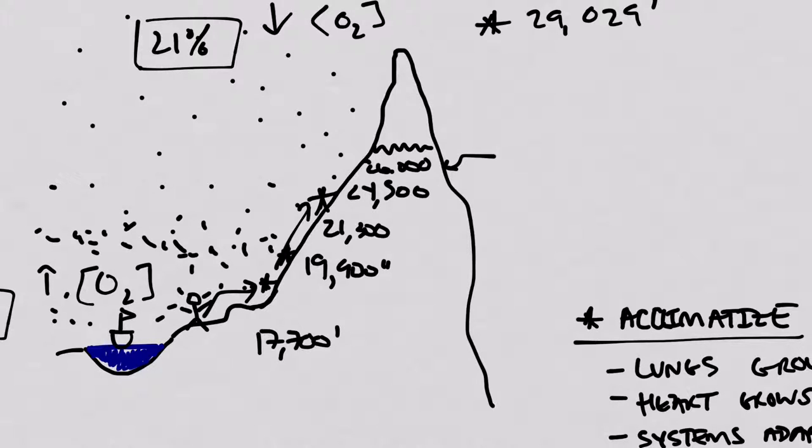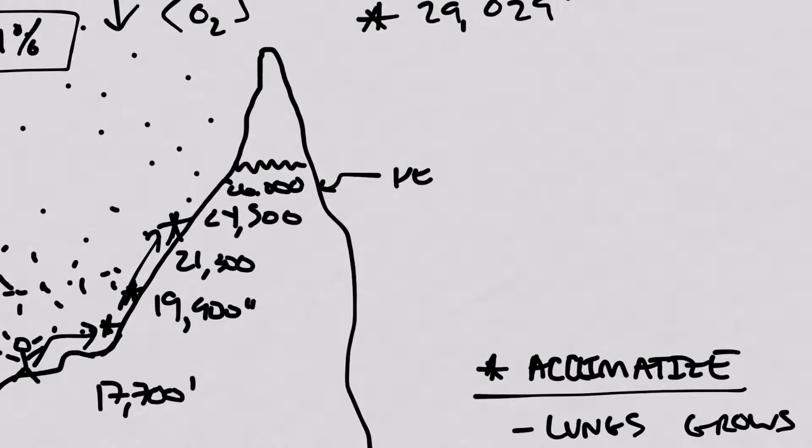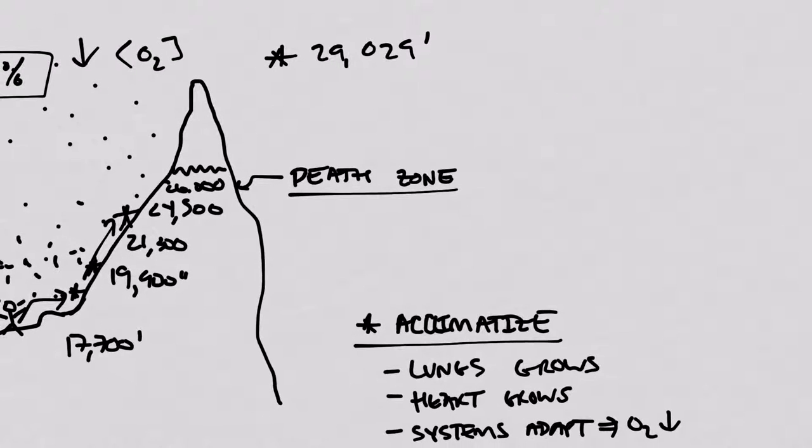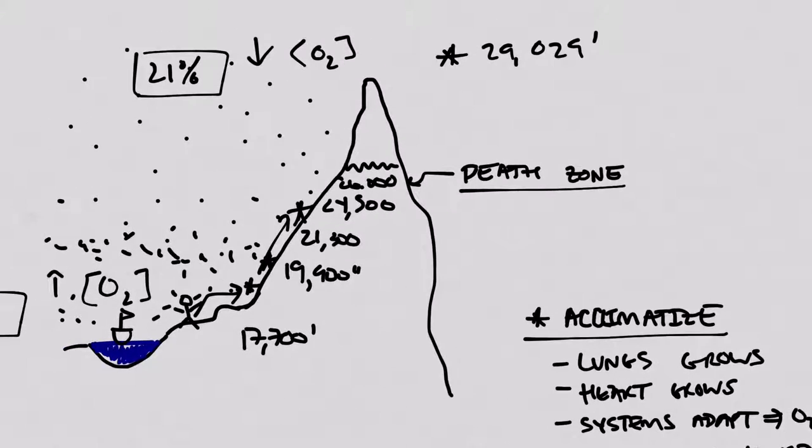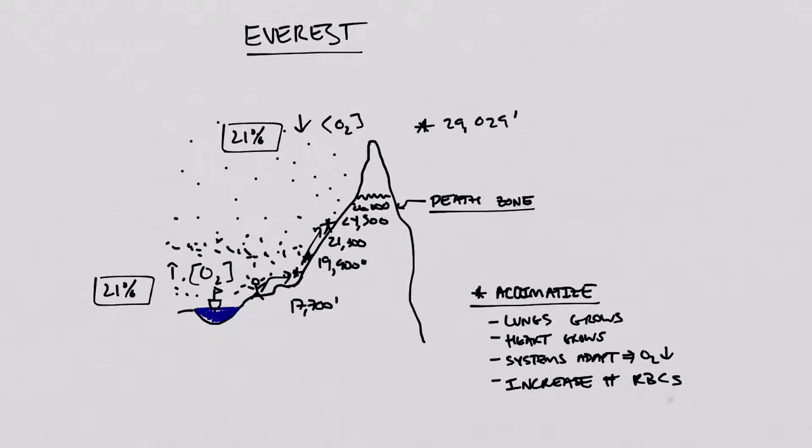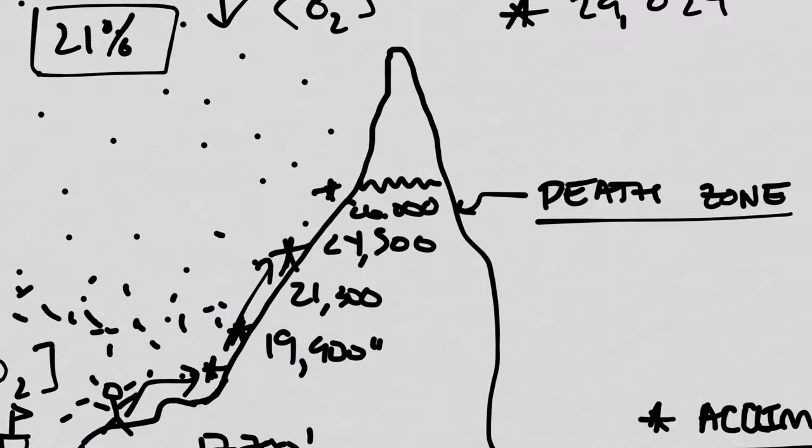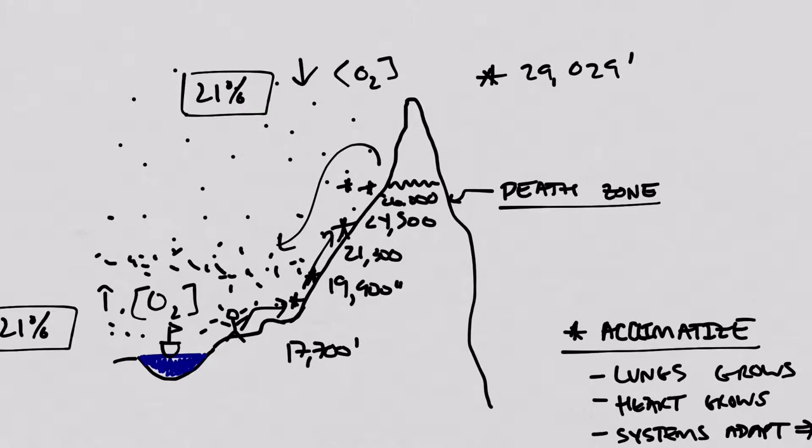And 26,000 feet is just at this point that we call the death zone. This is the point at which there's no more acclimatizing. Basically, once you pass into the death zone, there isn't enough oxygen in the air to sustain life and human body systems start to shut down. So it's just like a ticking time bomb until you are dead. Once you reach camp 4, you only have so long to hang out there until you have to descend to more oxygen-rich air.